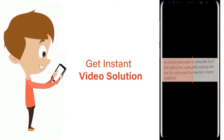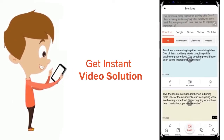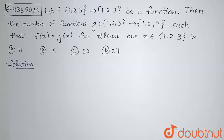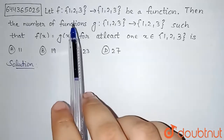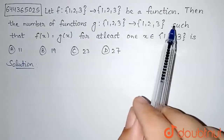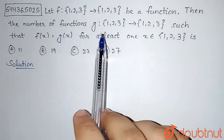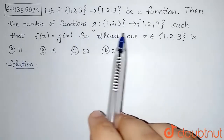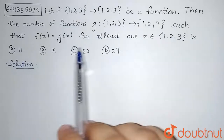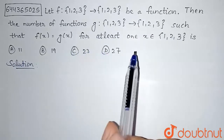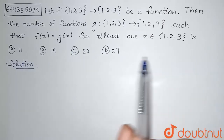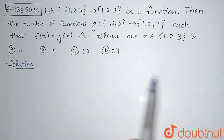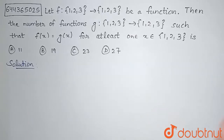The question is: let f from {1,2,3} to {1,2,3} be a function. Find the number of functions g from {1,2,3} to {1,2,3} such that f(x) = g(x) for at least one x belonging to {1,2,3}. We are given four options.